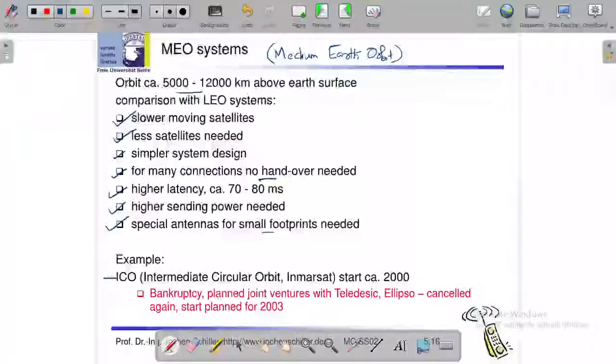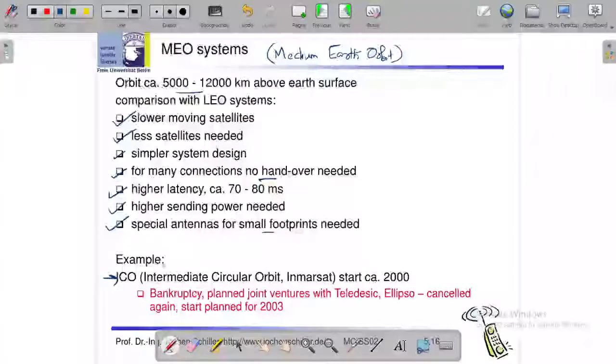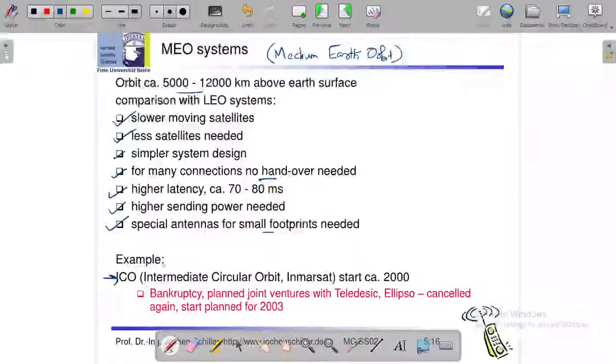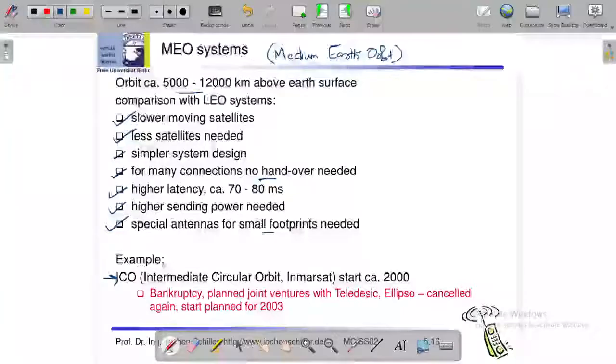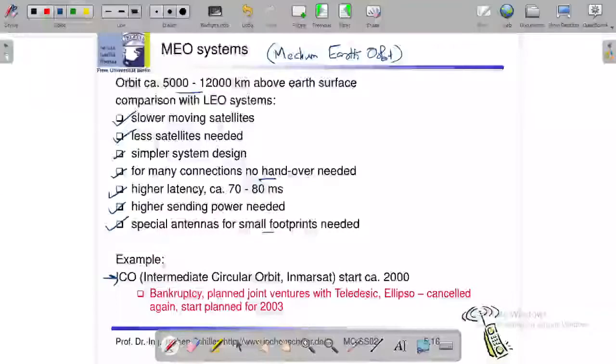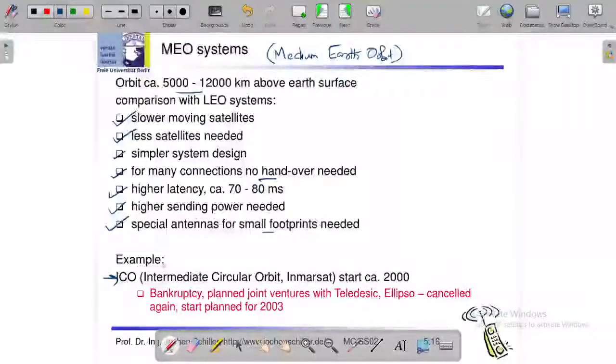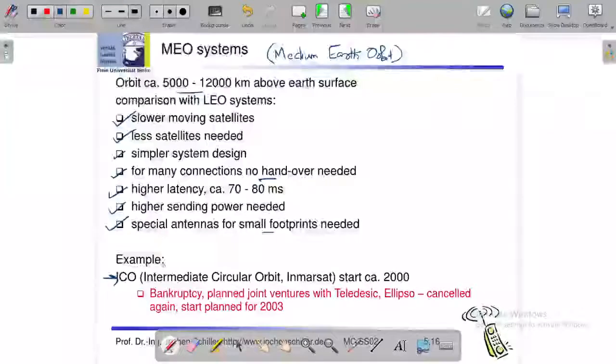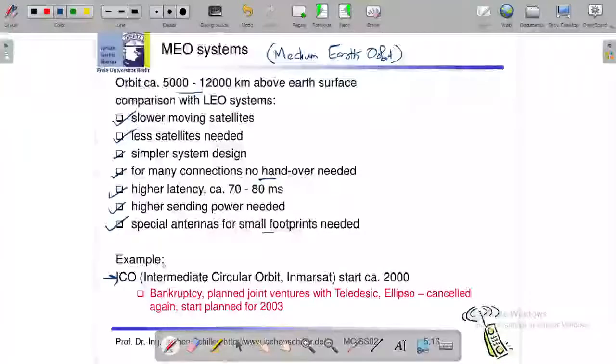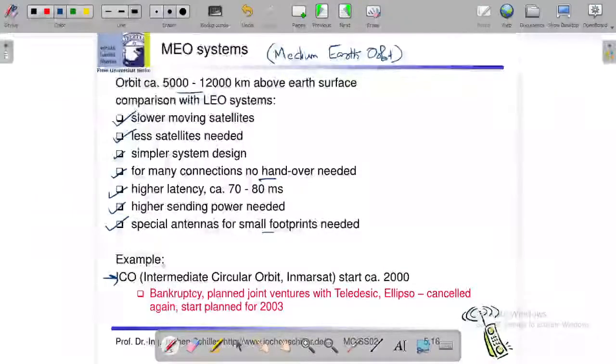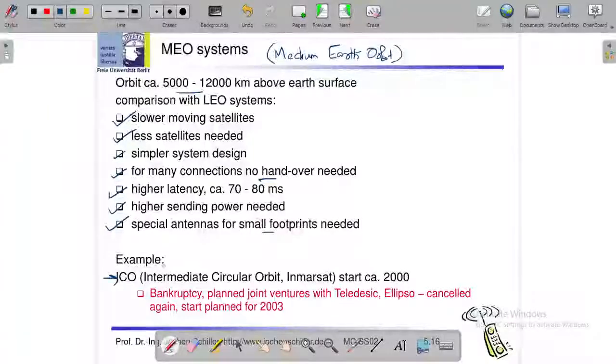And one of the example is ICO. ICO means medium earth orbit, it is an Intermediate Circular Orbit or name in between the name Inmarsat. So here we have three topics, we complete the satellite system.